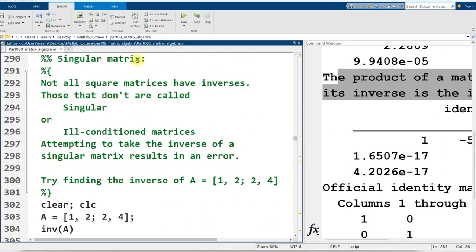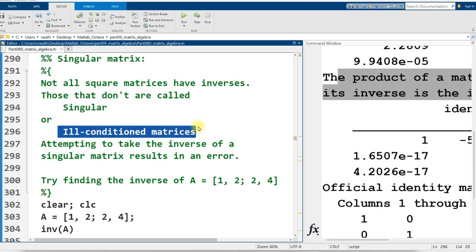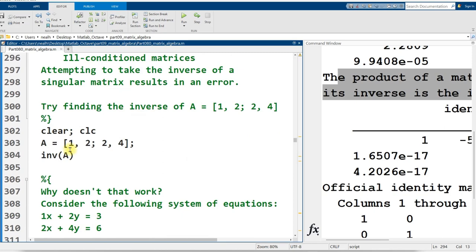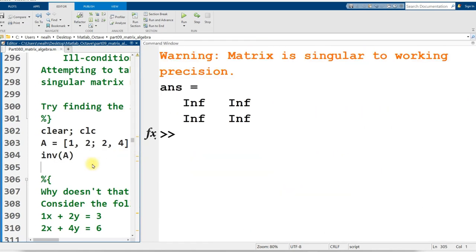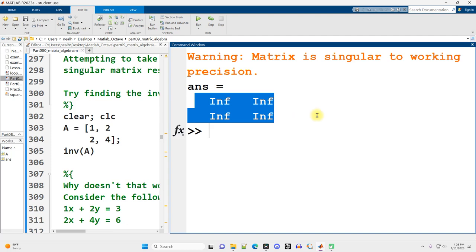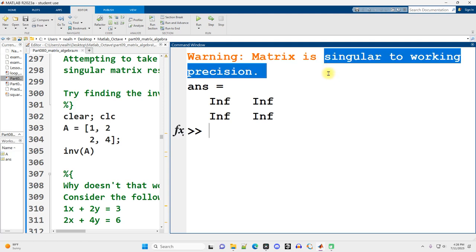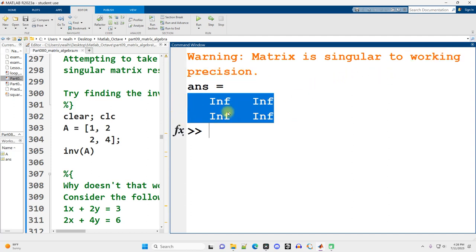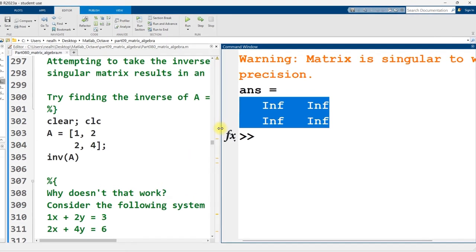A singular matrix. Not all matrices have inverses, and those that don't are called singular, or sometimes ill-conditioned matrices. We have this matrix right here, and let's check it out. MATLAB is going to warn me that this matrix is singular to working precision, and then it's going to give me a 2x2 matrix, but it's full of infinities, which is a little bit weird. This singular to working precision bit is MATLAB's way of warning us that MATLAB might be wrong. MATLAB has to round off its numbers at some point. To the amount of precision that it does have, the matrix appears to be singular. It appears to not have an inverse.